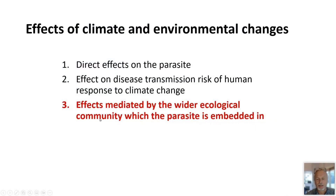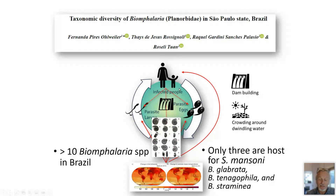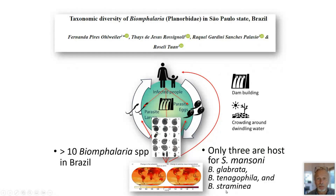On my last point about the wider ecological community: in my simplified model I include people and one snail species, but in reality — focusing on Brazil, for instance — there are actually 10 Biomphalaria species, of which only three (glabrata, tenagophila, and straminea) are supposedly involved in schistosomiasis transmission. These species may compete among each other and may respond in different ways to the challenges posed by climate change, and this remains a major area requiring further investigation.